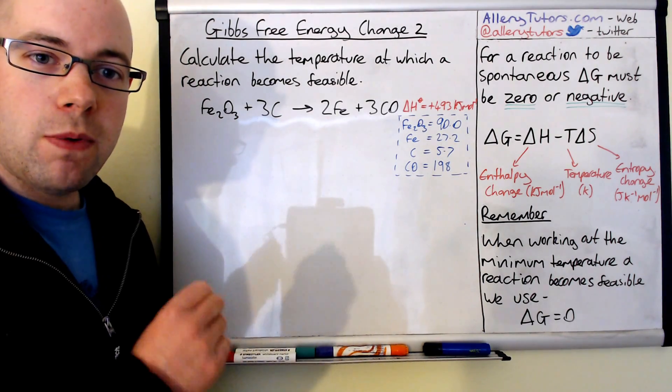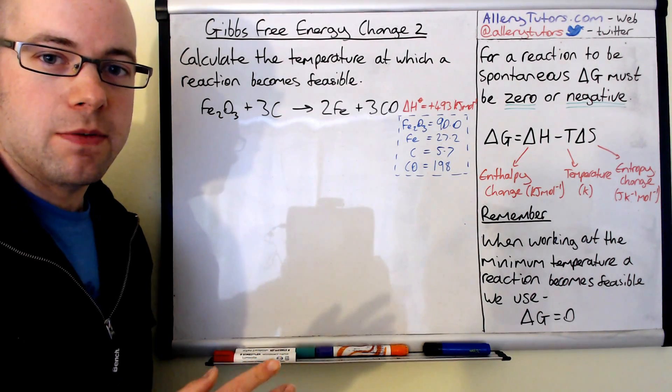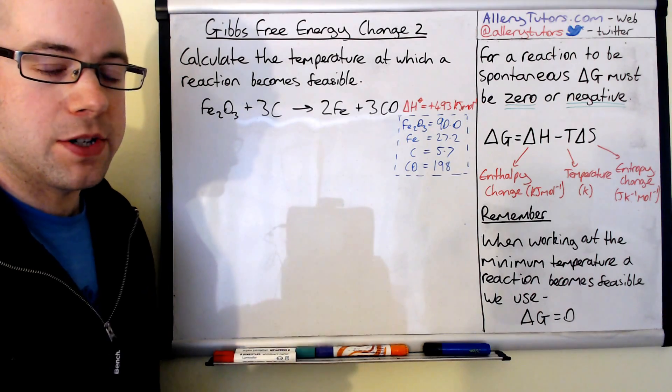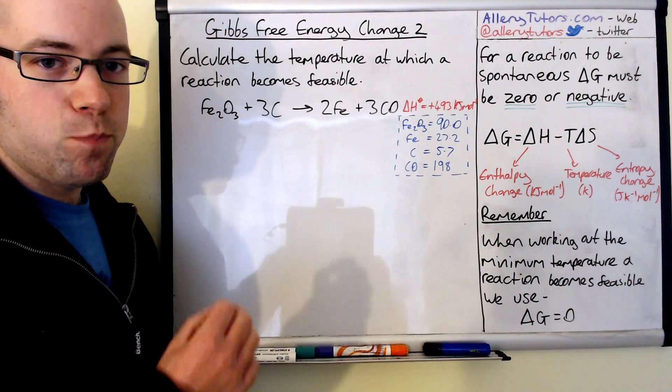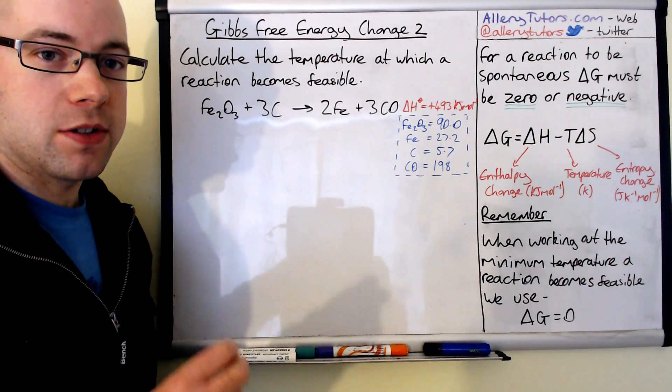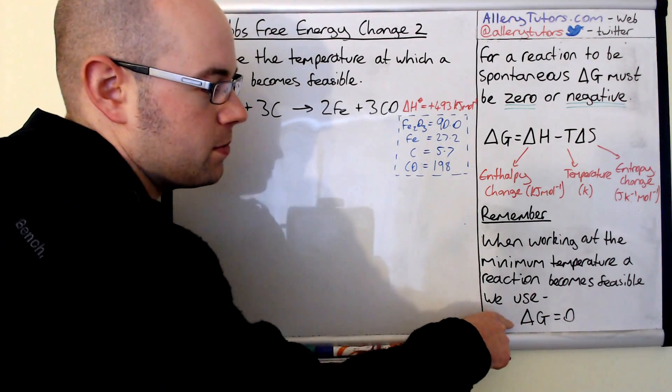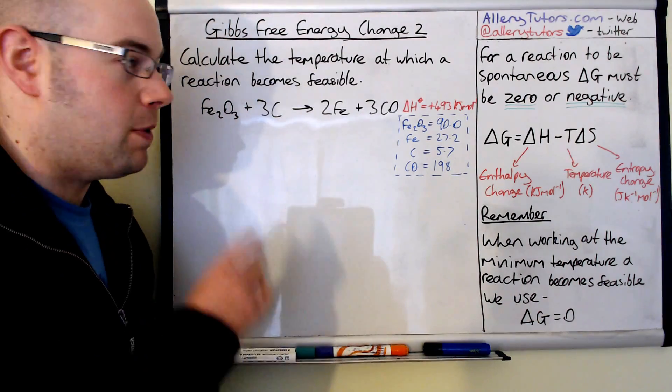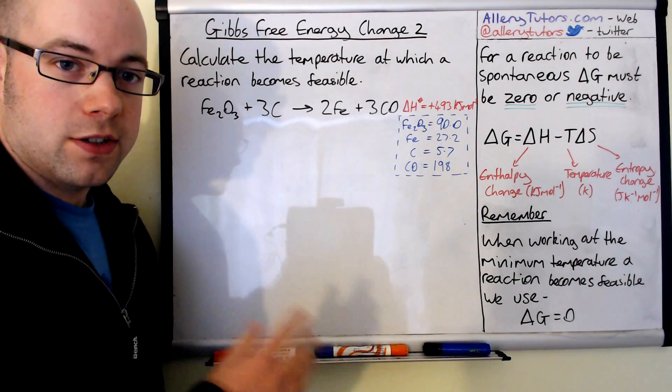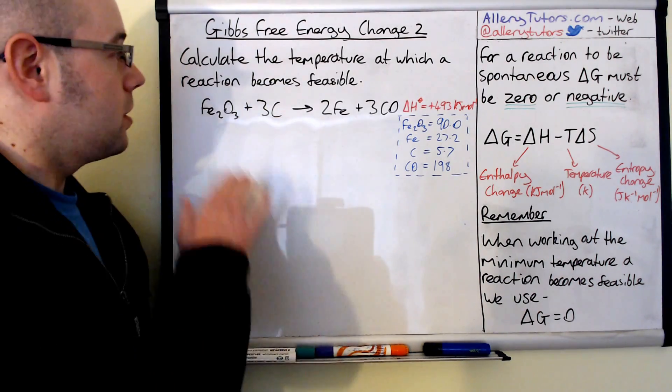When we do these calculations, we're going to work out the minimum temperature at which a reaction becomes feasible. We need to know what the value of delta G will be if it's feasible. So when you're doing this, you have to assume that delta G equals zero. When I do the calculations, you'll see where that comes in as well. So let's get on to the example.